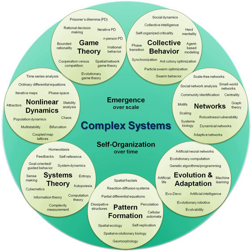The system's view was based on several fundamental ideas. First, all phenomena can be viewed as a web of relationships among elements, or a system. Second, all systems, whether electrical, biological, or social, have common patterns, behaviors, and properties that the observer can analyze and use to develop greater insight into the behavior of complex phenomena and to move closer toward a unity of the sciences. By 1956, theorists established the Society for General Systems Research.